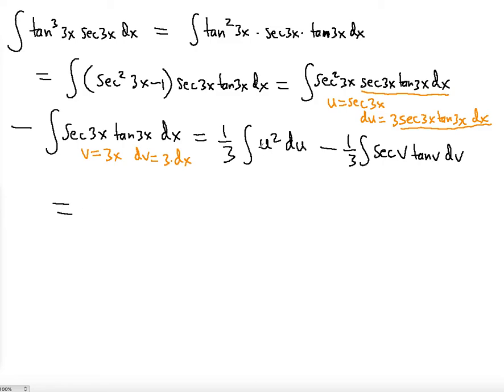the first integral is going to give us 1 third times 1 third. Let's write this better. 1 third times 1 third, u to the third. What is u? u is secant 3x. Secant cubed, because u to the third will be the antiderivative. Secant, let me write this better. Secant cubed 3x minus 1 third. Now the antiderivative is the secant v. So secant v, what is v? v is 3x, in terms of x.